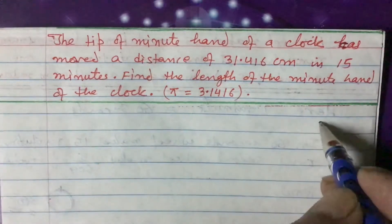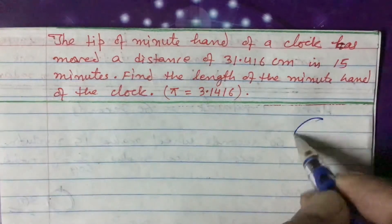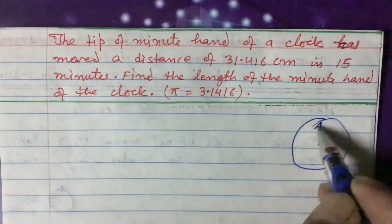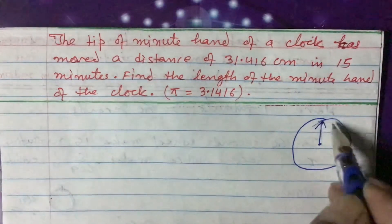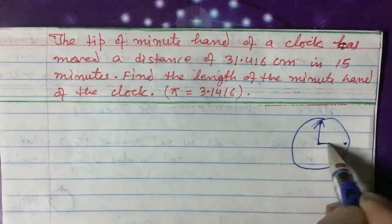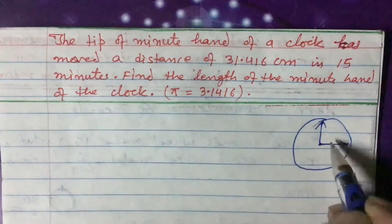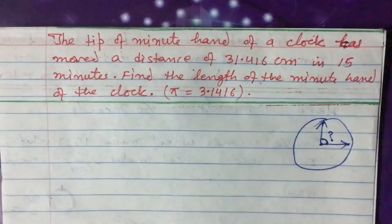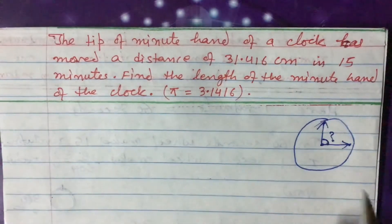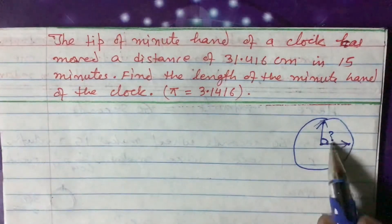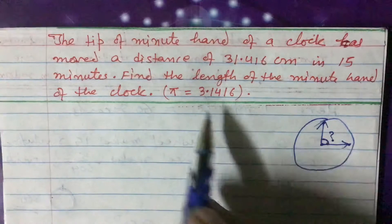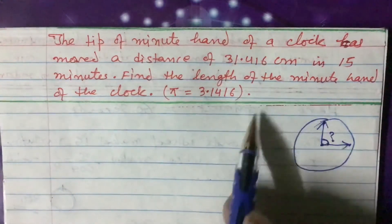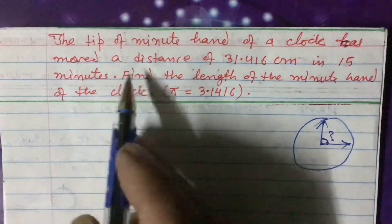In 15 minutes, if it is a clock like this, the minute hand will be here, and if the minute hand moves for 15 minutes it will reach a new position. What is the angle made by this minute hand — we need to find that out first. After finding the angle, we can find the length of the minute hand.